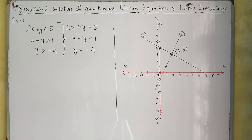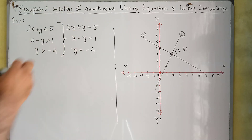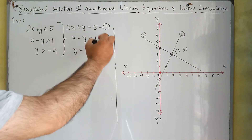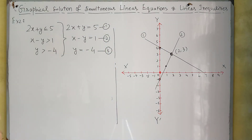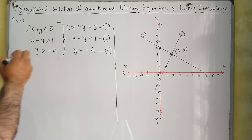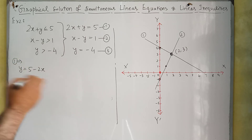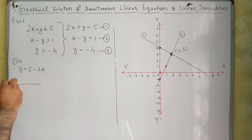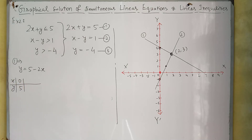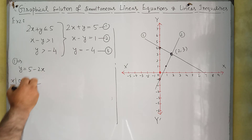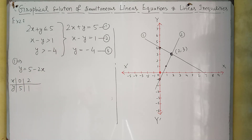So equation 1 becomes 2X plus Y equals 5, equation 2 becomes X minus Y equals 1, and equation 3 becomes Y equals minus 4. Now we will draw the graph of these equations one by one. For equation 1, making Y the subject gives Y equals 5 minus 2X. If X equals 0, then Y equals 5, and if X equals 2, then Y equals 1.